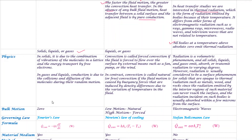For conduction heat transfer, it occurs in solids, liquids, and gases. If we focus on a body, we will emit thermal radiation. For conduction, the heat transfer is a combination of lattice vibration and free electrons. If we focus on a gas, the heat transfer involves transfer between molecules that are closer together. That is the lattice vibration and free electron mechanism.